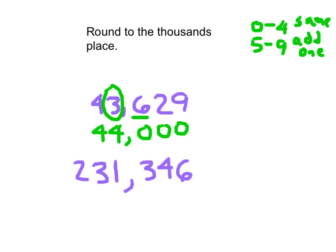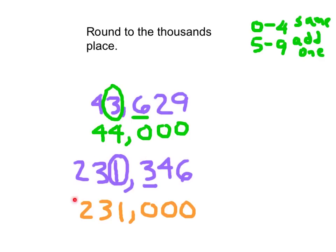Let's go through the rounding process for the next example. It says round to the thousands place again, so we circle the 1 and underline the 3. Looking at that underlined digit, it is between 0 and 4, so the circled digit stays the same. Digits to the right change to 0, and all other digits stay the same. When you feel you're done rounding, you should always look back and say: I rounded to the thousands place — is this a thousands number? Is it approximately very close to the original? Yes, they look to be about the same.